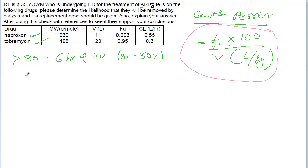If the value of this equation is less than 20, then very small amount will be removed, probably very insignificant amount will be removed. It is like less than 10 percent will be removed from the body during 6 hours of hemodialysis.